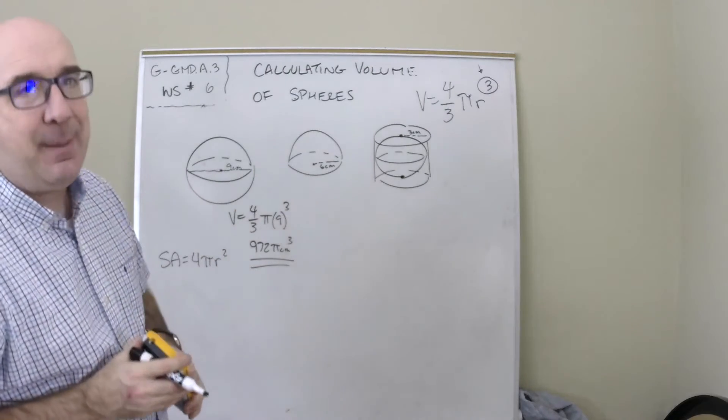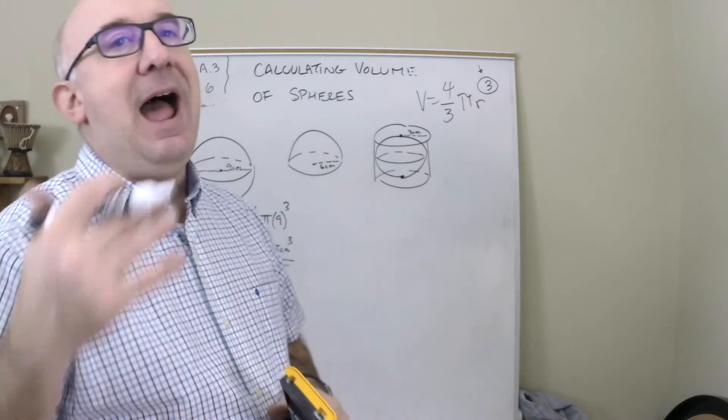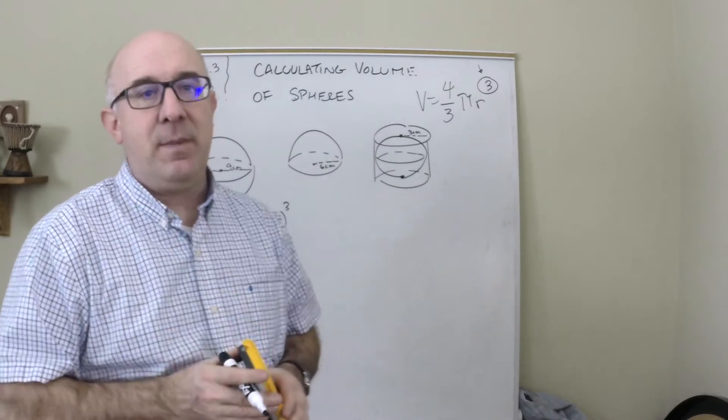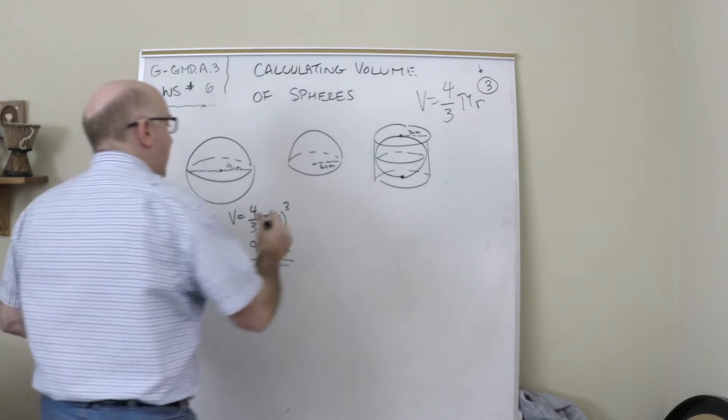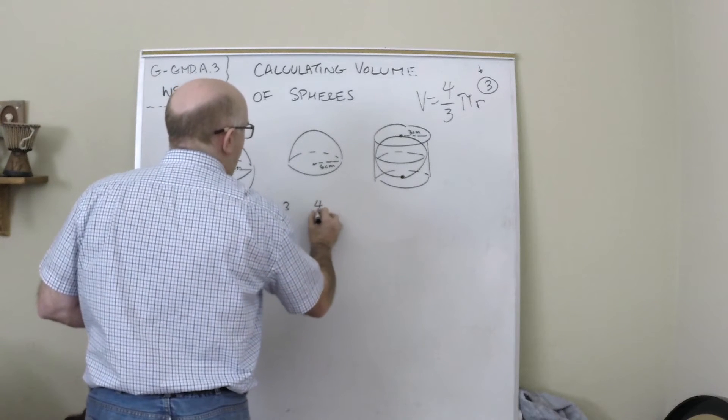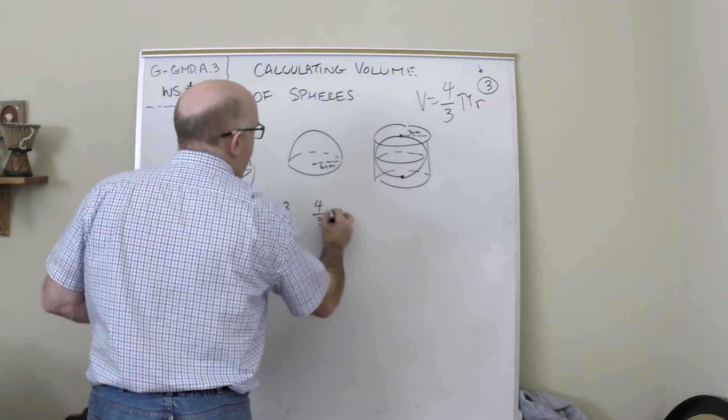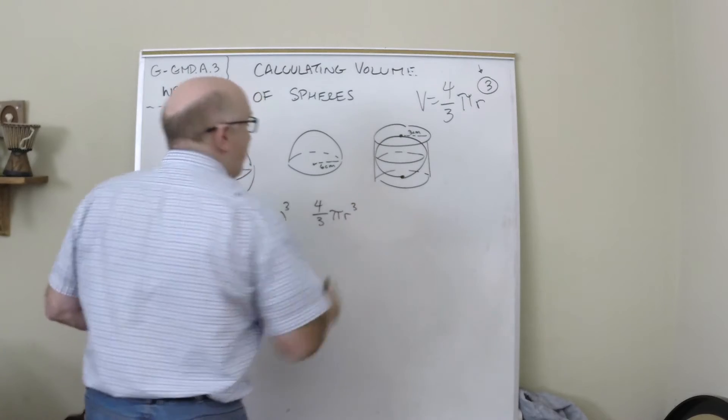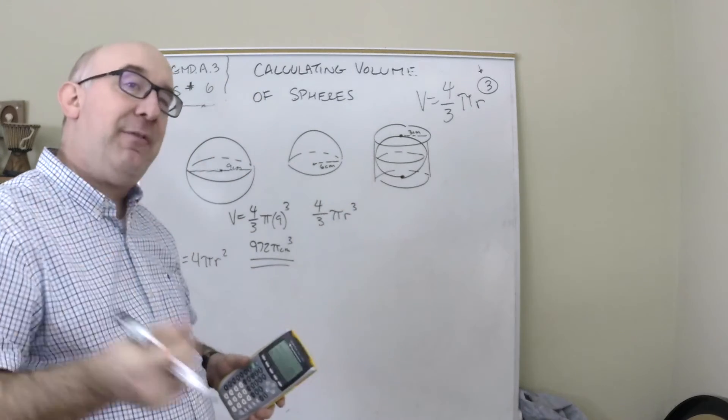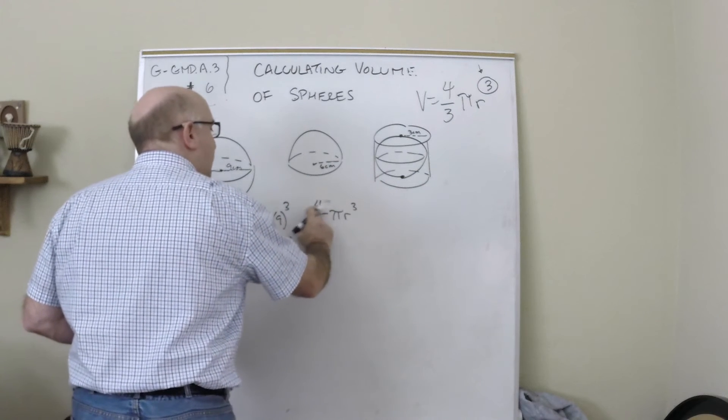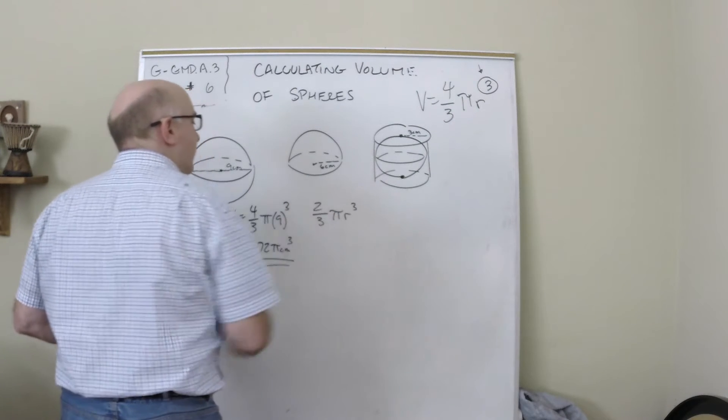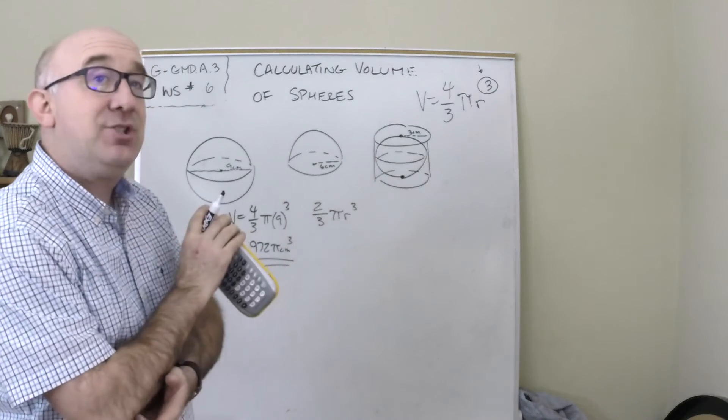Now here, this is called a hemisphere because it's half of the sphere, like the northern and southern hemispheres of our earth. So what we do here is four-thirds πr³, but we only want half of that, so we divide by two, and the four becomes a two. So really, two-thirds πr³ is the result.